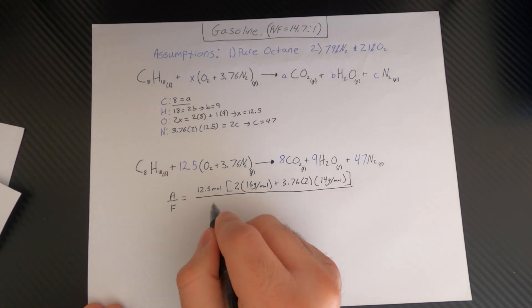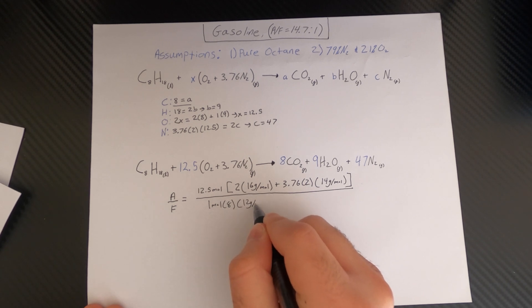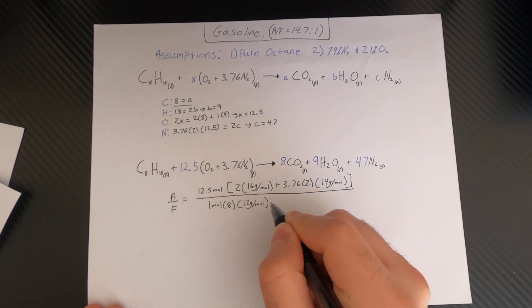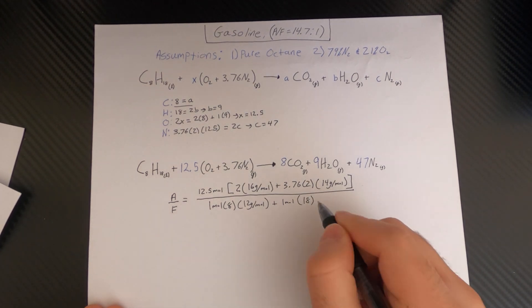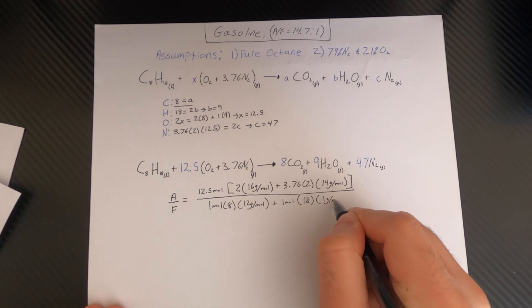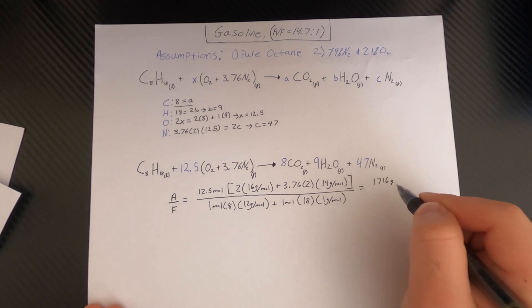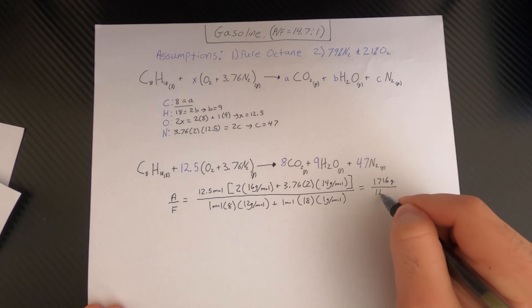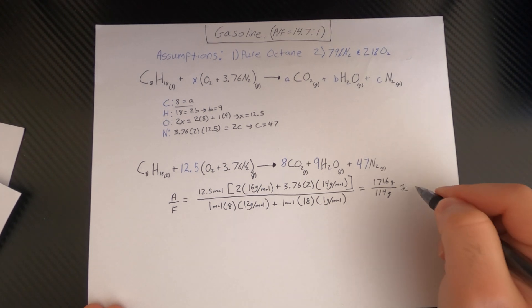We'll get 1716 grams of air divided by 114 grams per mole and then 12 grams per mole, plus the one mole again times the 18 for hydrogen and then one gram per mole. Now if we go ahead and calculate this, we'll get 1716 grams of air divided by 114 grams of fuel, or octane in this case, and this comes out if you divide through to about 15 to 1.